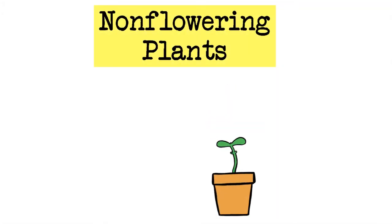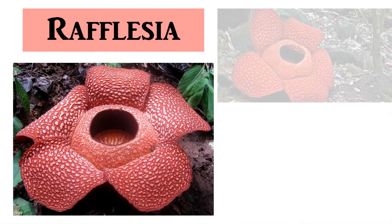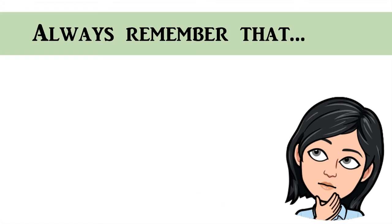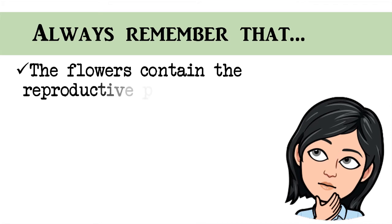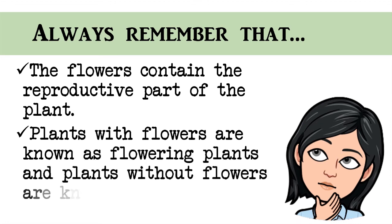Some plants have small, green, or white flowers that go unnoticed. Examples are kogon grass and love grass. Did you know that the biggest flower in the world is the rafflesia? Its flower can grow to 1 meter wide and weigh up to 10 kilograms. Rafflesia flowers give off a smell of rotting flesh — hence its local name is corpse flower. We should always remember that the flowers contain the reproductive parts of the plant. Plants with flowers are known as flowering plants, and plants without flowers are known as non-flowering plants.